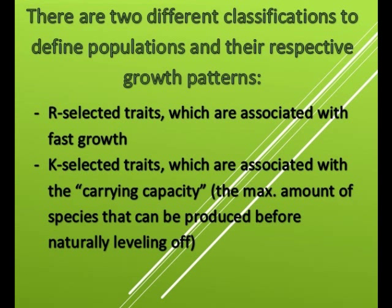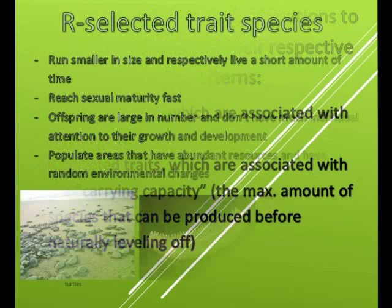There are two different classifications to define populations in their respective growth patterns. R-selected traits, which are associated with fast growth, and K-selected traits, which are associated with the carrying capacity — the maximum amount of species that can be produced before naturally leveling off.